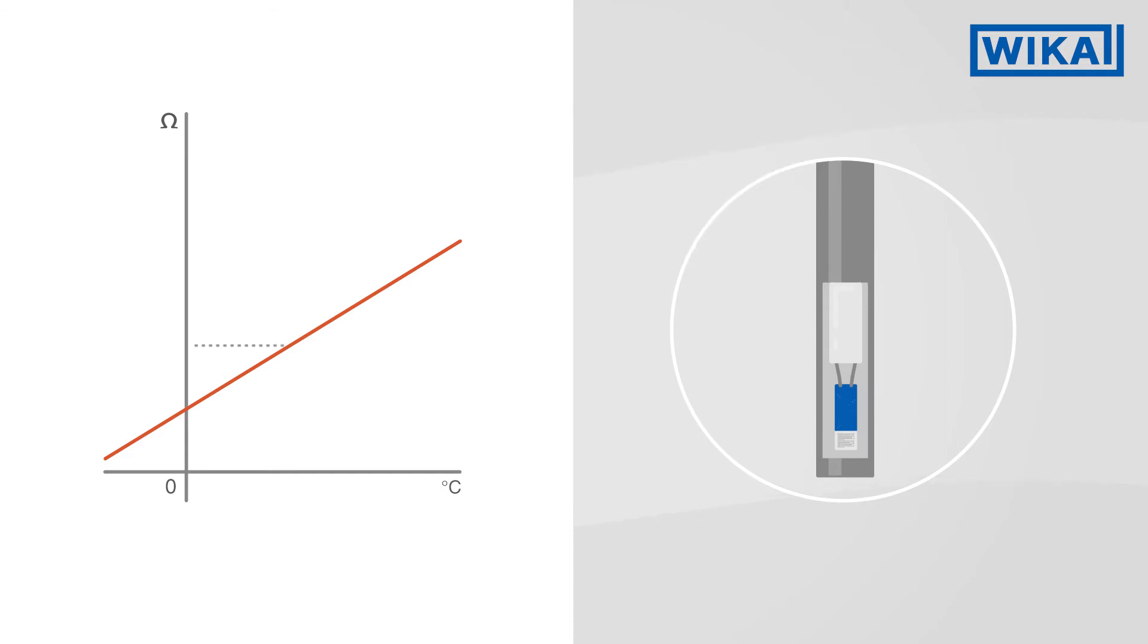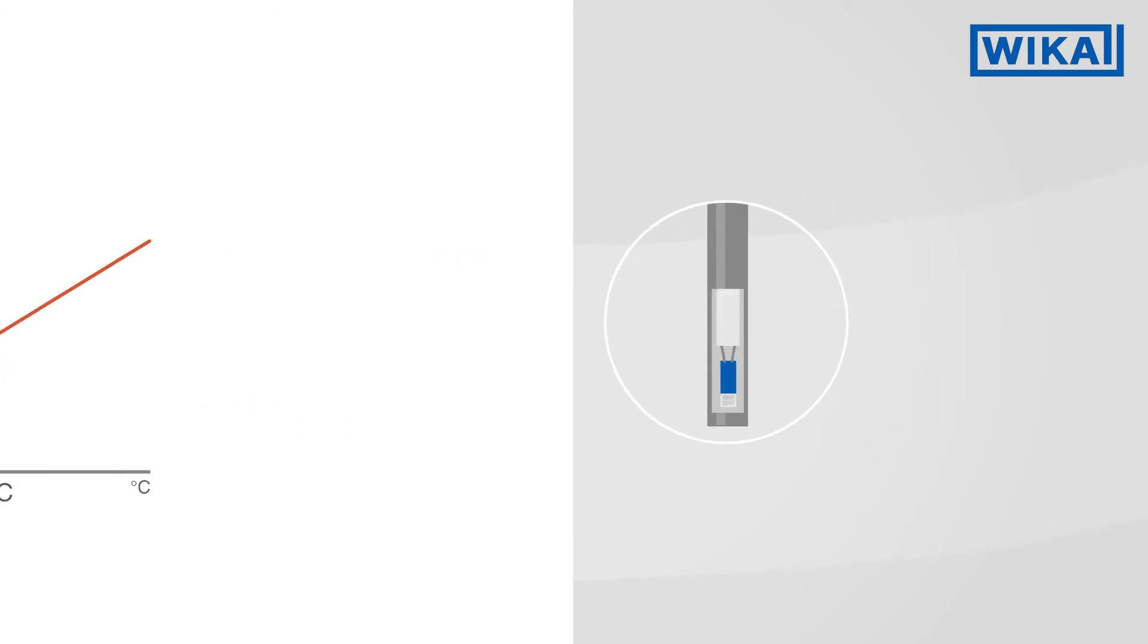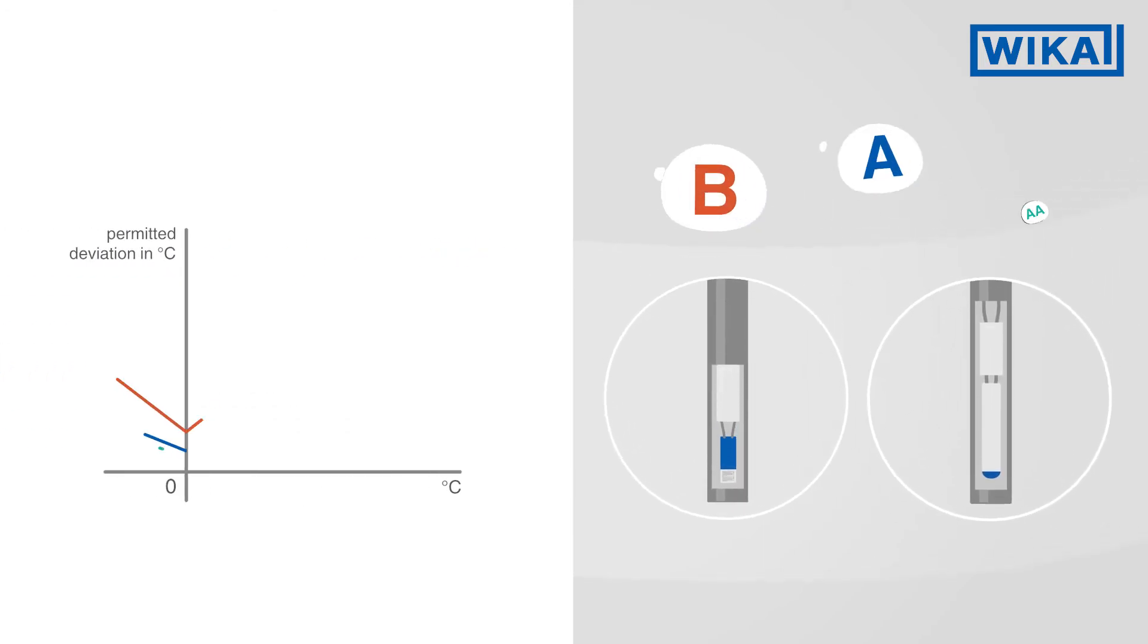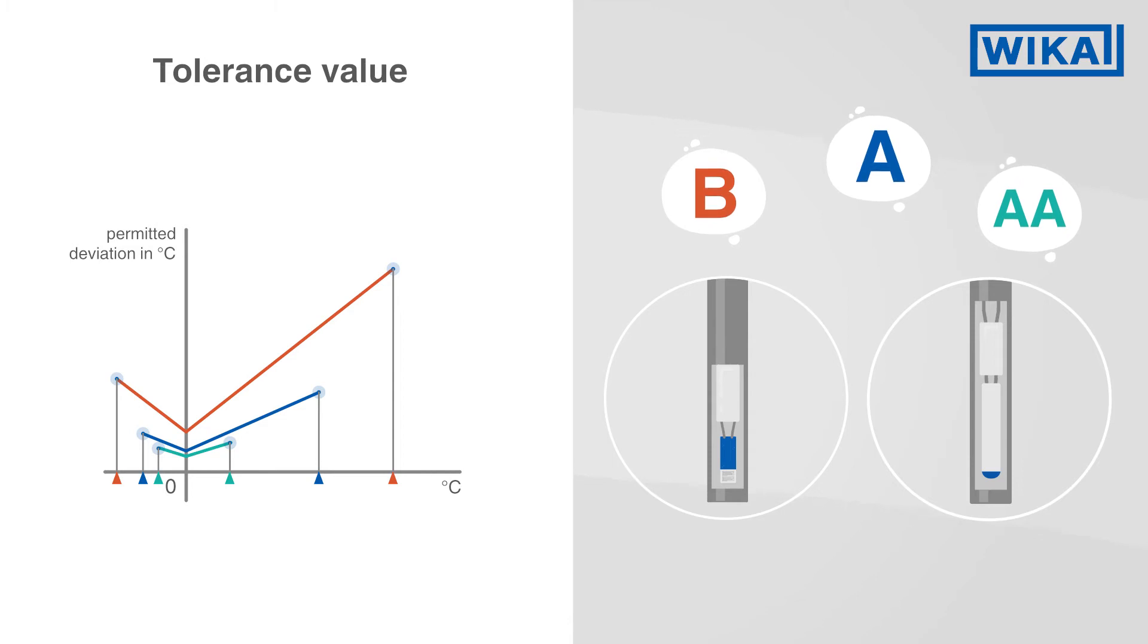By measuring the resistance, the temperature can be determined very accurately. Resistance thermometers are available in different accuracy classes. For standard versions with increasing accuracy, the measuring range in which they can be used shrinks.